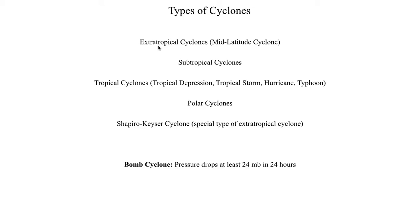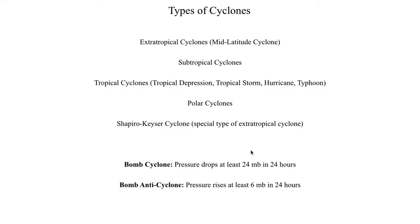A couple of other definitions that tie into cyclones: a term you'll often hear is a bomb cyclone, which refers to a cyclone whose central pressure drops at least 24 millibars in the course of 24 hours. Usually a bomb cyclone is something like a tropical cyclone that's rapidly intensifying, but you can also get extratropical cyclones — including Shapiro-Keyser cyclones — classified as a bomb cyclone. You can also have a bomb anticyclone, which refers to a high-pressure system whose maximum central pressure rises at least 6 millibars in the course of 24 hours.